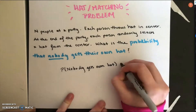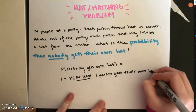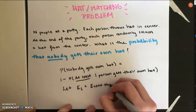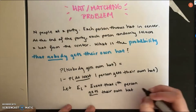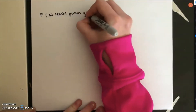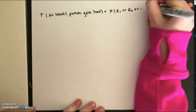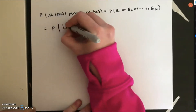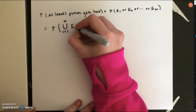To begin to solve this problem, the probability that nobody gets their own hat is equal to 1 minus the probability that at least one person gets their own hat. Let E sub i equal the event that the i-th person gets their own hat, where i ranges from 1 to N. The probability that at least one person gets their own hat is equal to the probability of the union of events E sub i from i equals 1 to N.